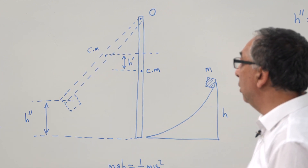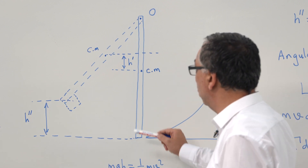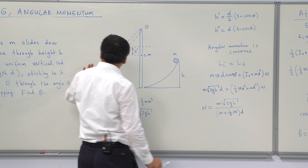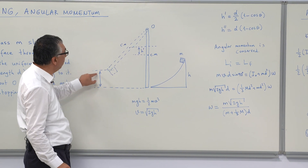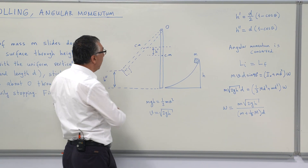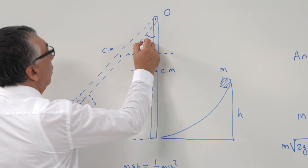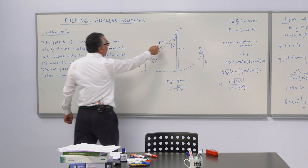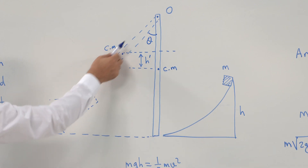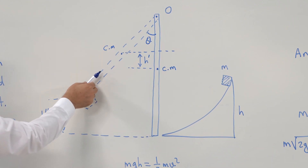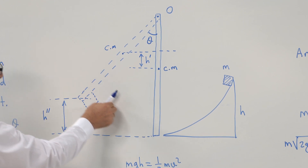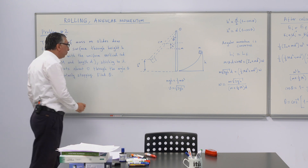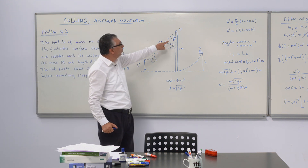The mass m slides down and collides with the rod, sticking to it. After the collision, the system swings upward to some height h double-prime, where the angle reached is theta. We want to determine the maximum angle theta the system can reach.